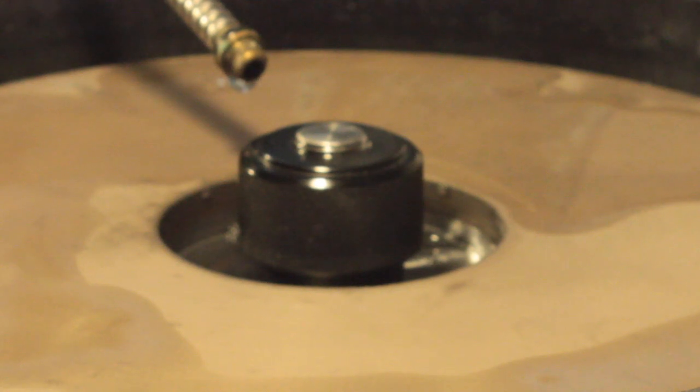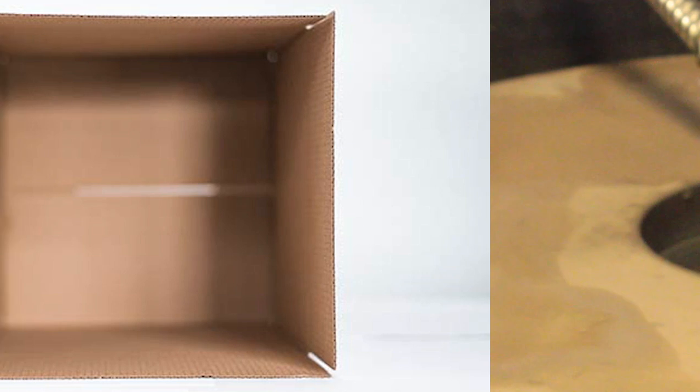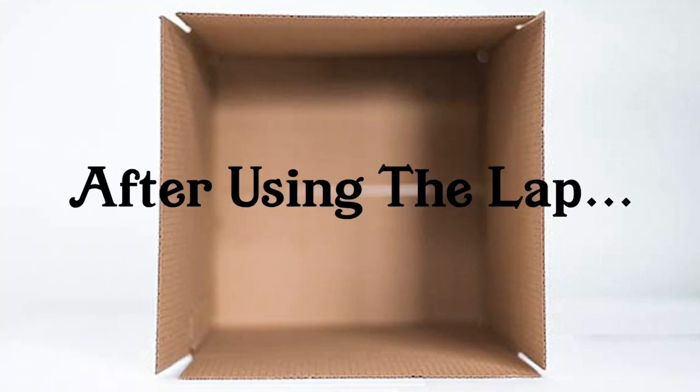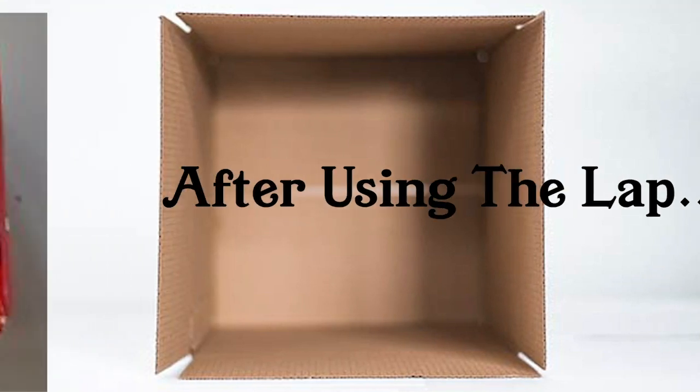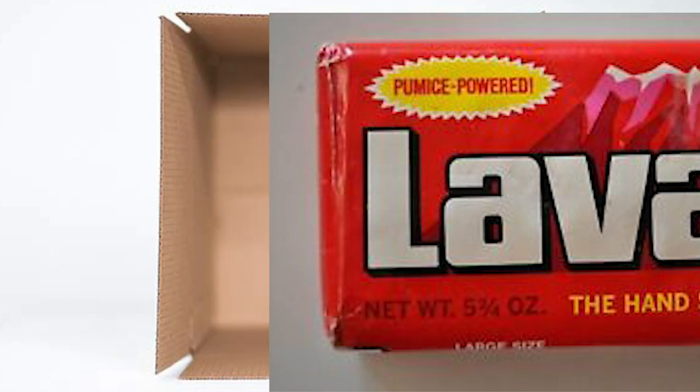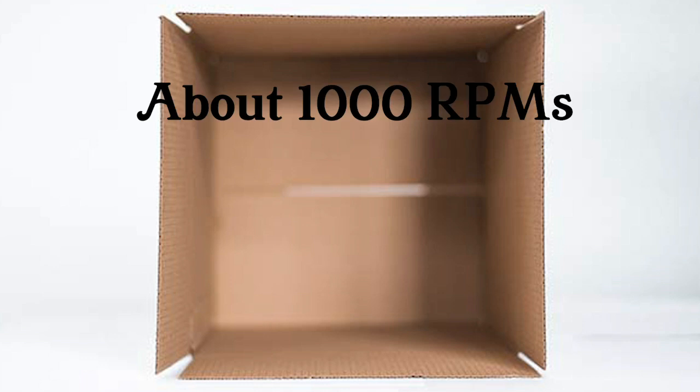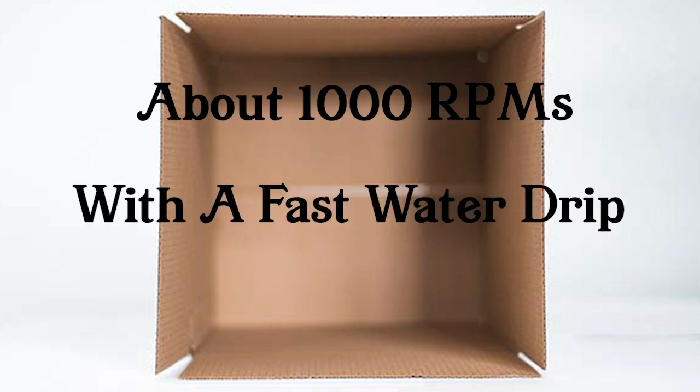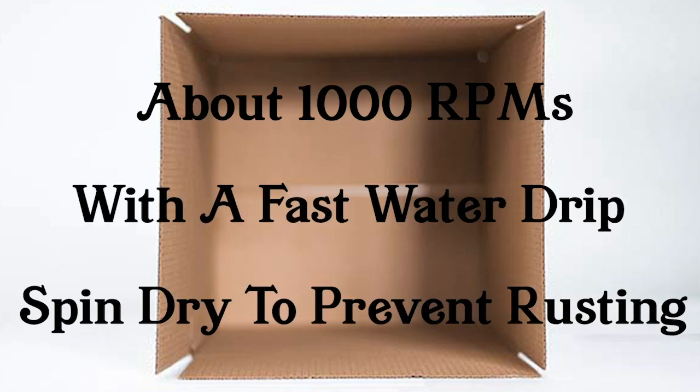After using the lap, Tom recommends you use lava soap, the one with pumice, to pass the bar of soap from the outside to the inside of the rotating lap several times, about a thousand RPMs with a fast water drip, and then spin dry the lap so it doesn't rust.